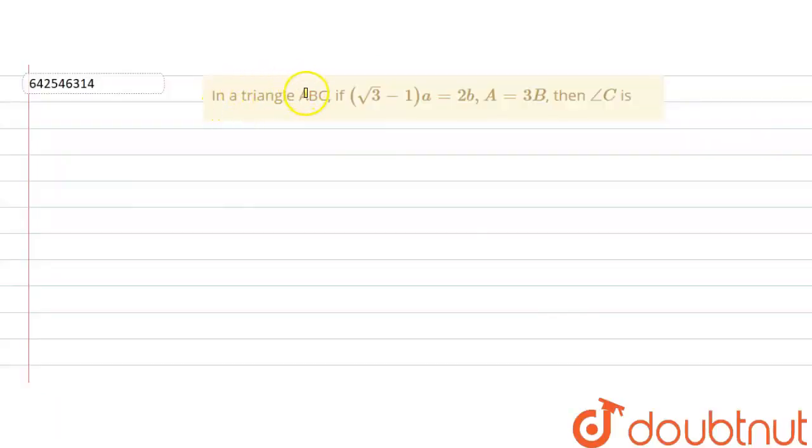In this question, we are given that in a triangle ABC, if root 3 minus 1 times A is equal to 2B, and A is equal to 3B, then angle C is equal to...